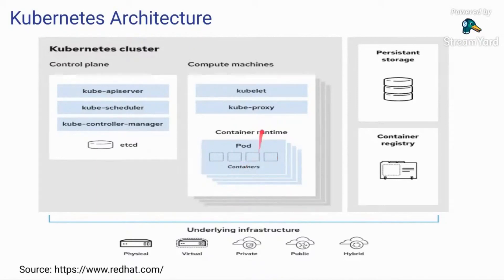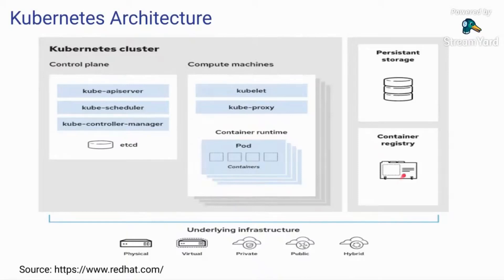You also have a container runtime — this can be Docker, CRI-O, or Rocket. The container runtime takes a container image and converts it into an accessible container. A container image is a static file. The container registry — which can be internal or external, like Docker Hub — stores all the static information about your container and its dependencies. Typically you'll have a private container registry within an organization, or a public repository like Docker Hub. In Google Cloud, they have their own container registry where you can store your data.